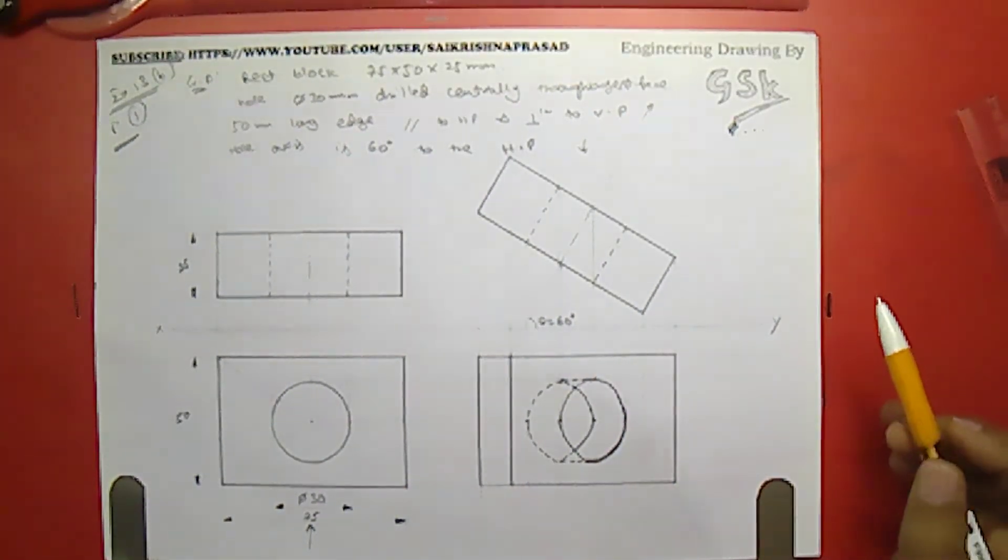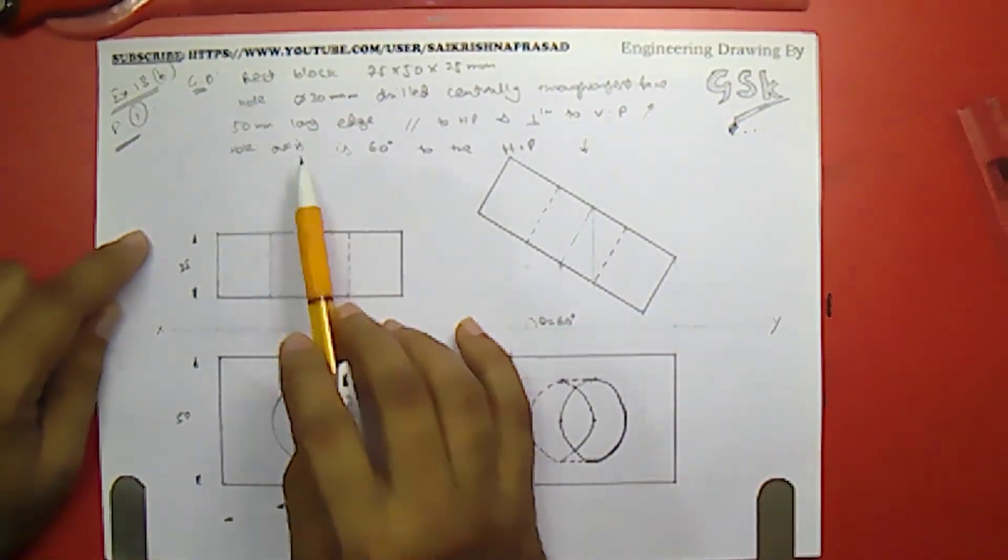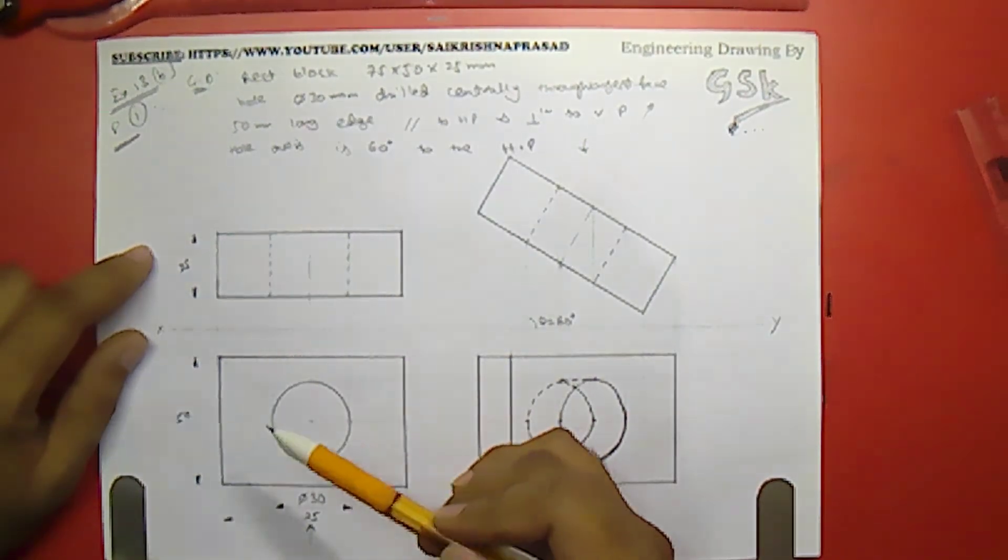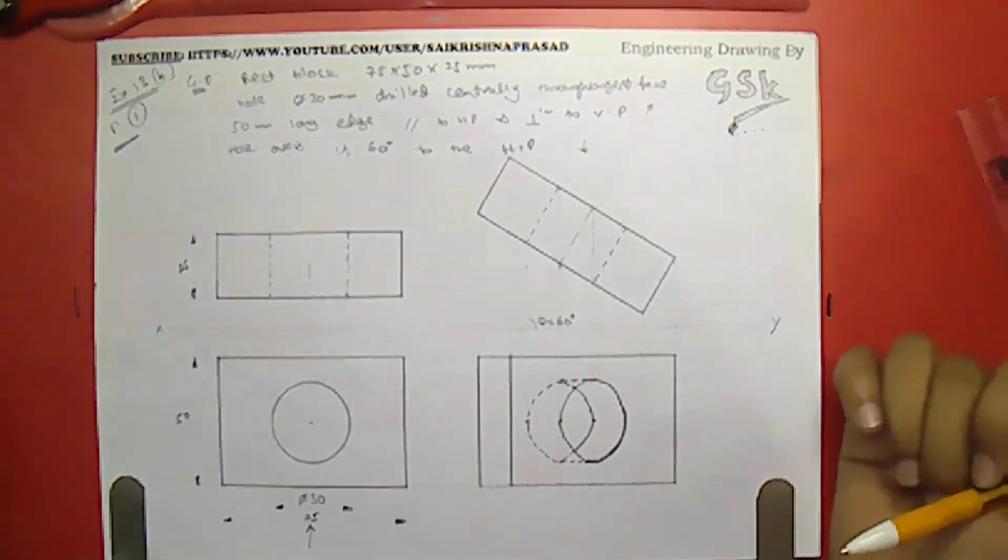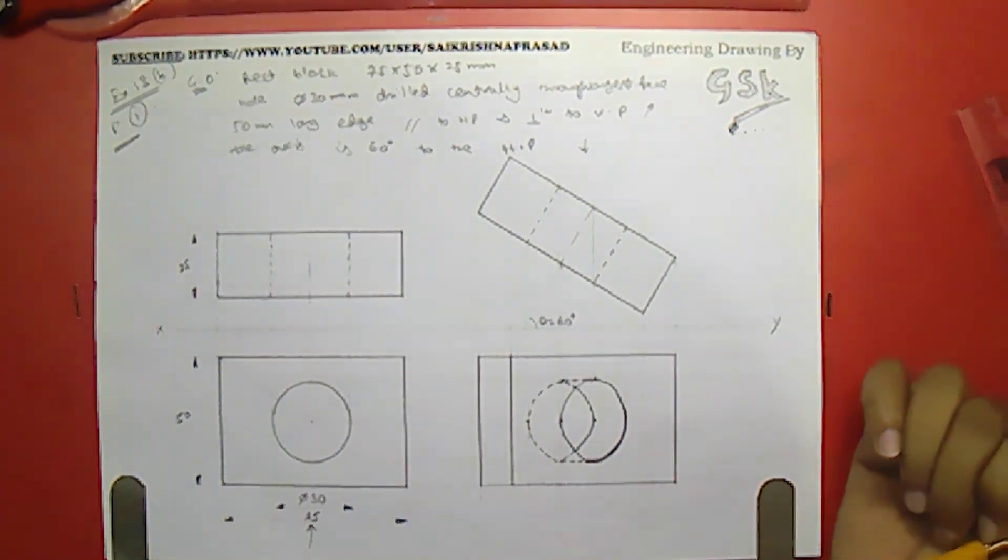So with this we have finished the projections of rectangular block having a hole centrally and their axis is inclined at 60 degrees to the HP. I hope everyone understands this and follow the group regularly for updates in engineering drawing. Thanks for watching.